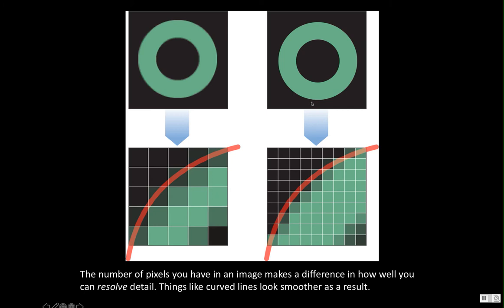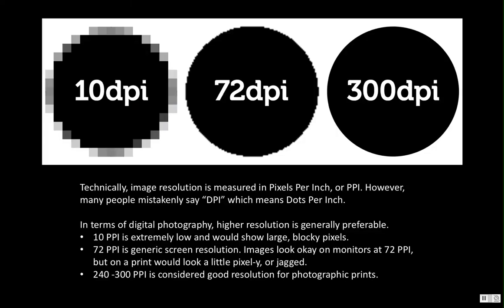The number of pixels you have makes a difference in how well you can resolve detail — and resolve is where we get the word resolution. With few pixels, the edge of something like this donut shape looks really jagged and pixelated. With a lot more pixels, it's easier to resolve the edge and it looks smoother. When we think about printing, higher resolution results in a finer print. We typically say DPI, but really it's PPI — pixels per inch — how many pixels we have per inch of print space.